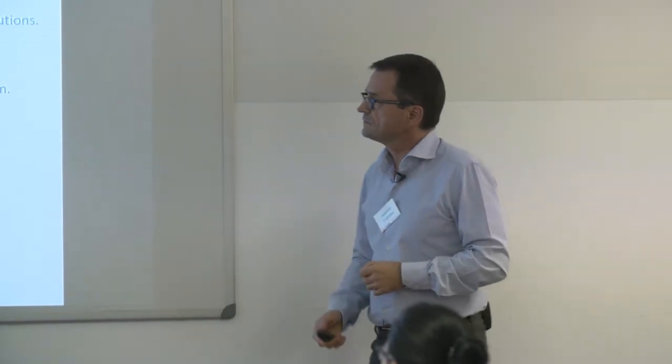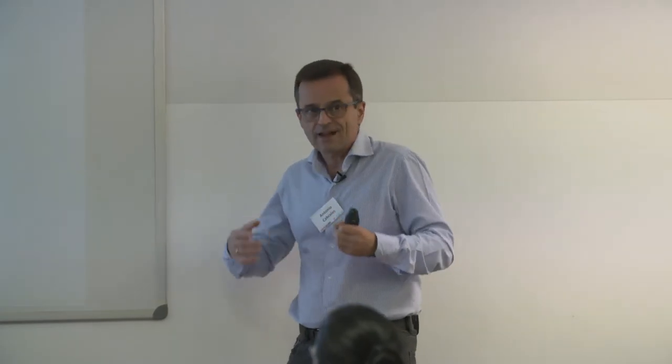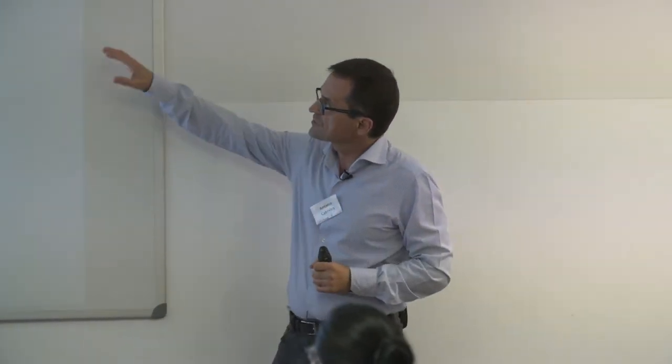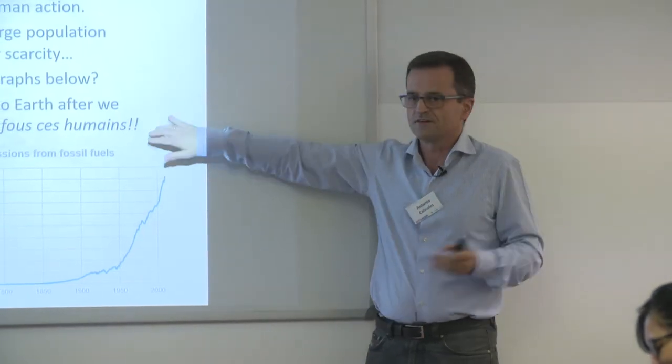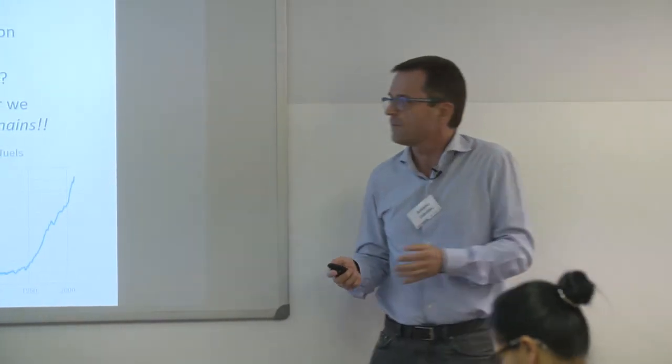The same structure is repeated within units. Unit four is motivated with a social dilemma: climate change as a consequence of human action, with consequences like rising sea levels, population movements, and crop instability. We show graphs making clear that since the late twentieth century we've known temperatures would rise dramatically. And yet we're doing nothing. That seems like a puzzle — an extraterrestrial arriving after we disappear would think we were crazy.